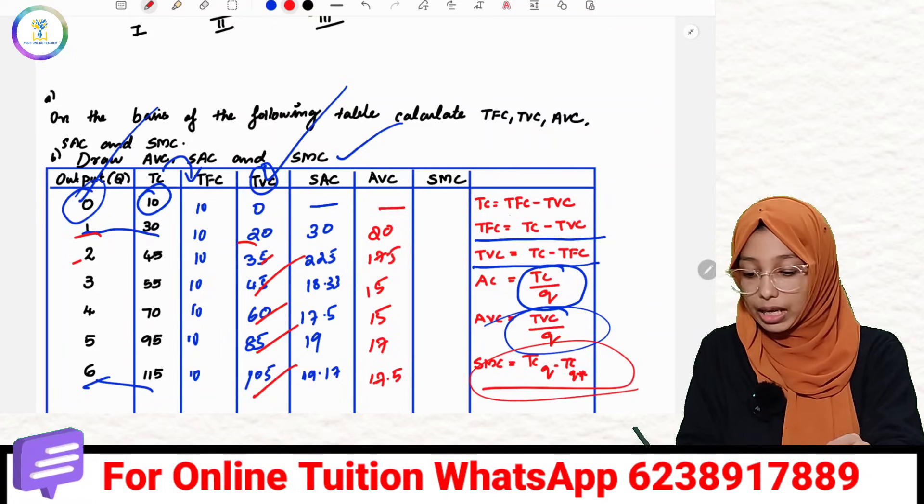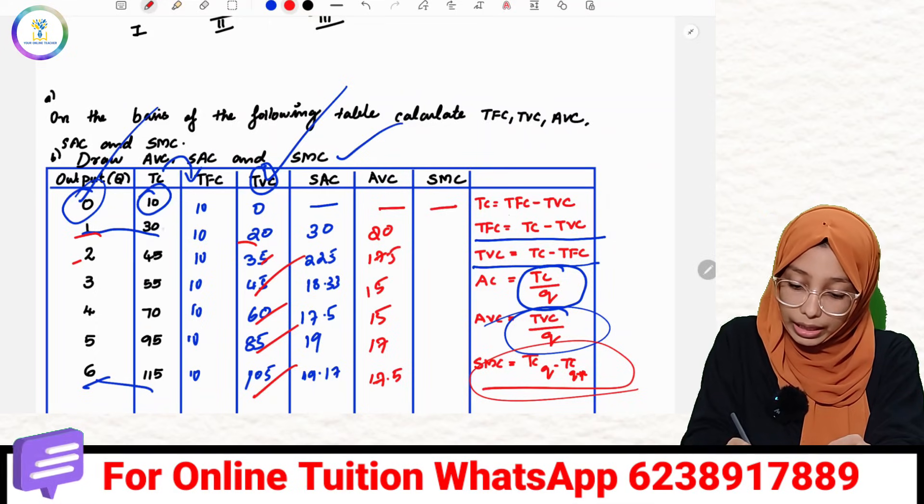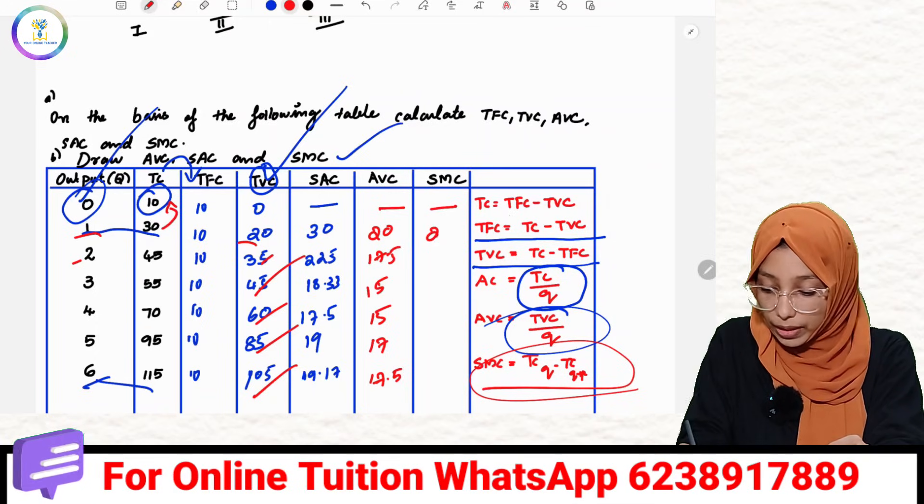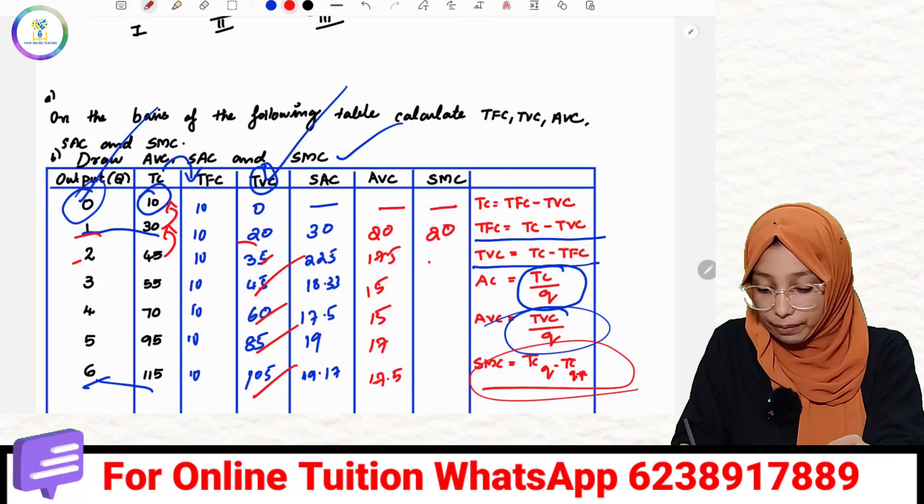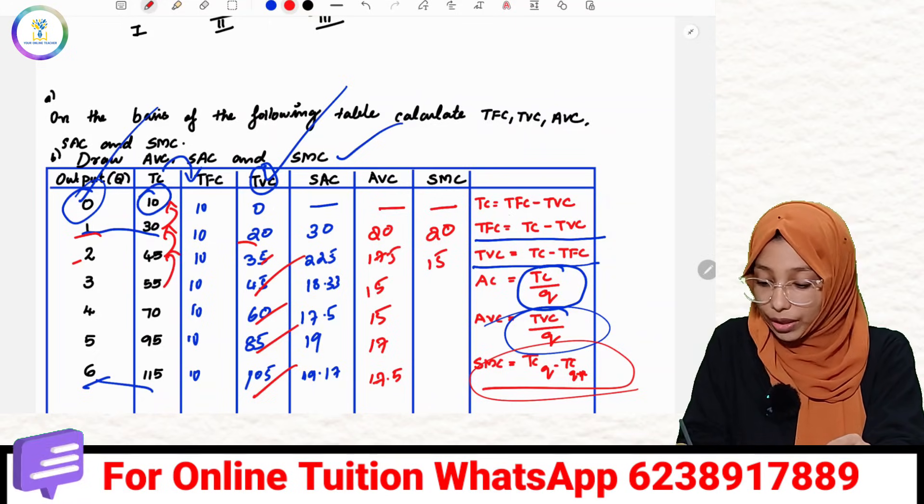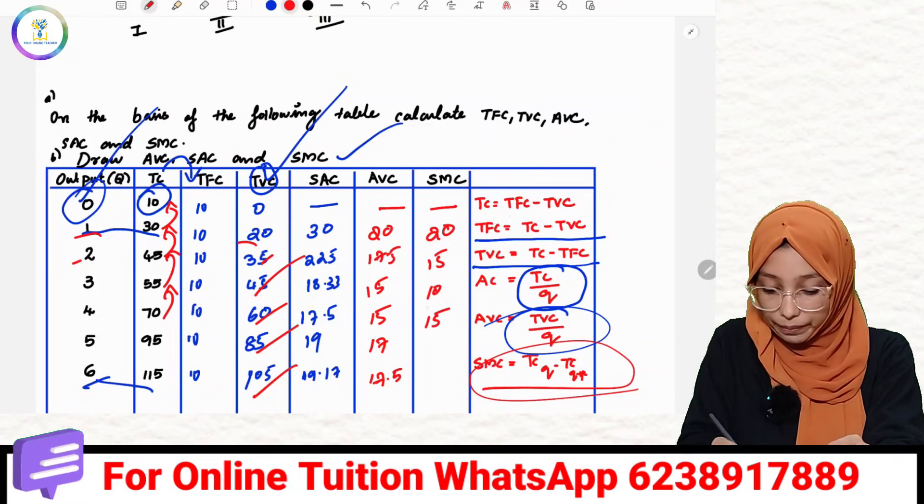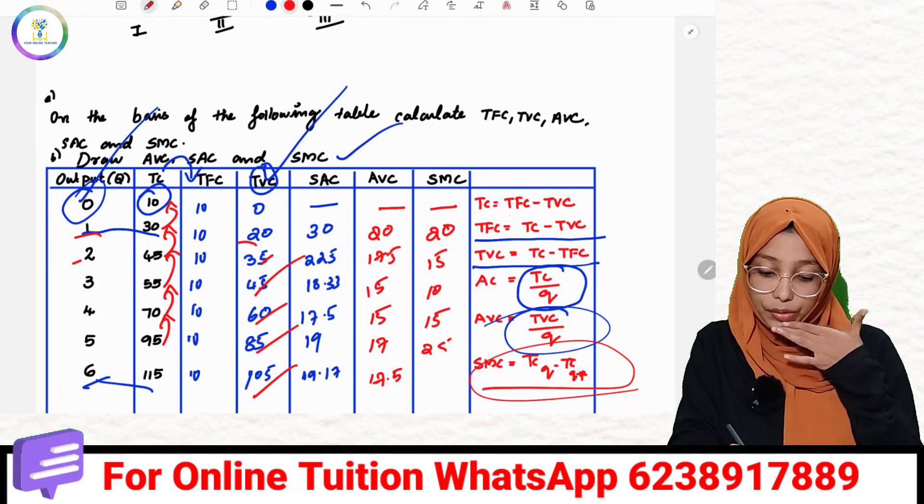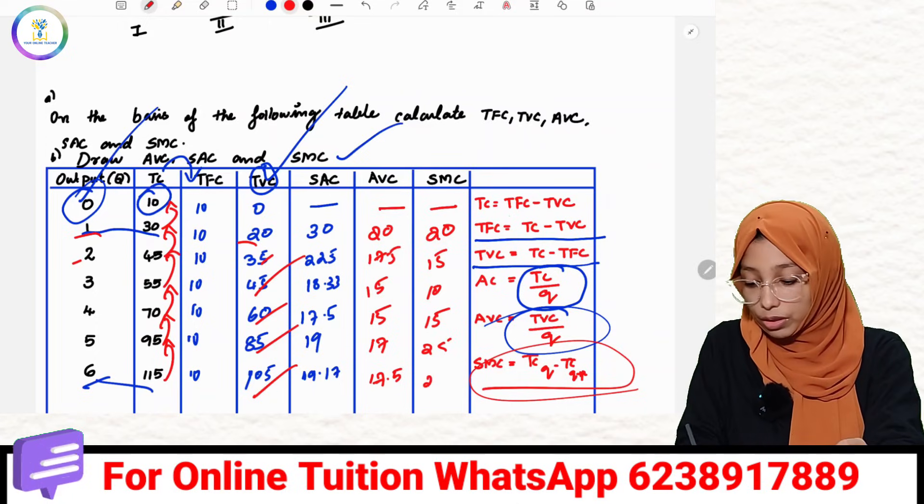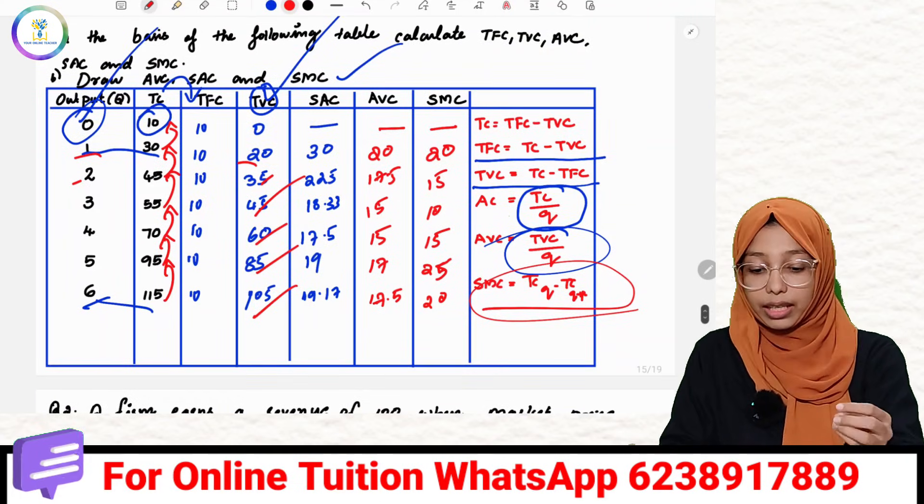And this is SMC. TC change calculation. This is 30 minus 10 equals 20, 45 minus 30 equals 15, 55 minus 45 equals 10, 70 minus 55 equals 15, 95 minus 70 equals 25, 115 minus 95 equals 20. That's what we call SMC.